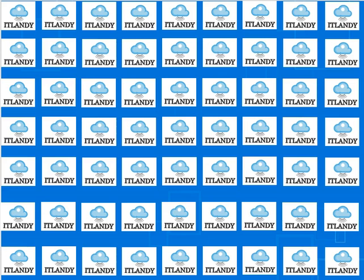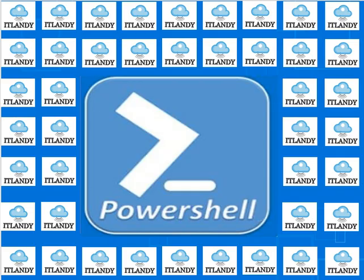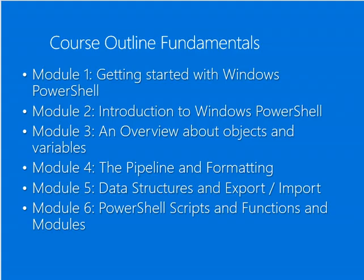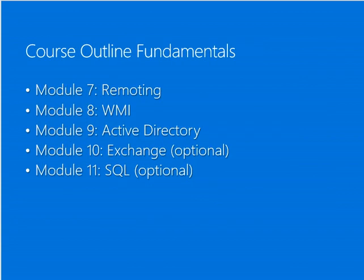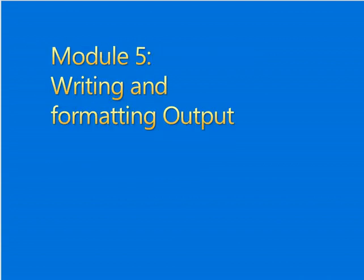Hello, welcome back to Module 5, Part 4 of our Windows PowerShell Nugget course. So far we have covered getting started in Module 1, intro in Module 2, objects and variables in Module 3, pipeline and formatting in Module 4, and then we started with data structures in Module 5. Later on we will do scripting and functions, remoting, WMI, AD, Exchange, and SQL.